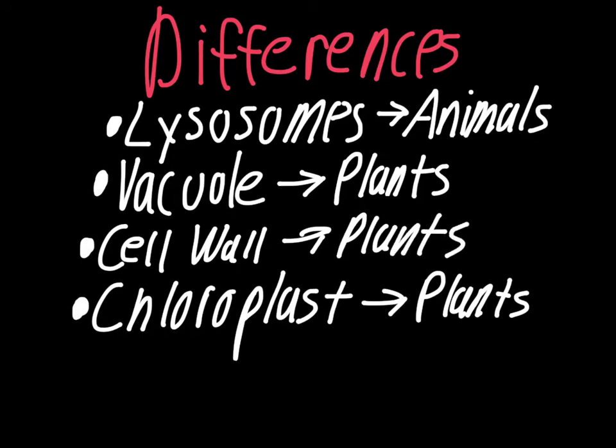One interesting thing about going through this is that many of the differences are things found only in plant cells. We often think of animals as being more complicated than plants, but when it comes to genetics and cell parts, plants are actually a lot more complicated. Animals can behaviorally adapt by responding differently to their environment, but plants can't do that — they're stuck in the same place. So in order to adapt, plants need to adapt at the cellular or genetic level in ways that animals don't.